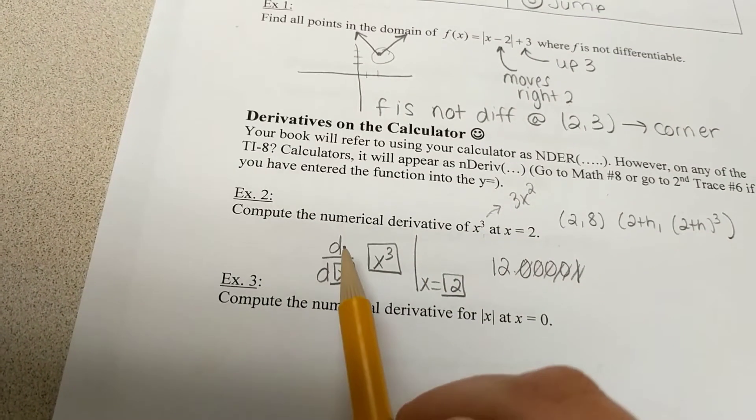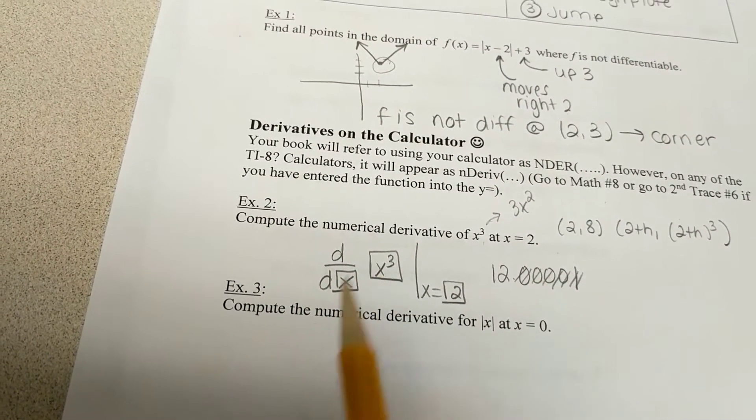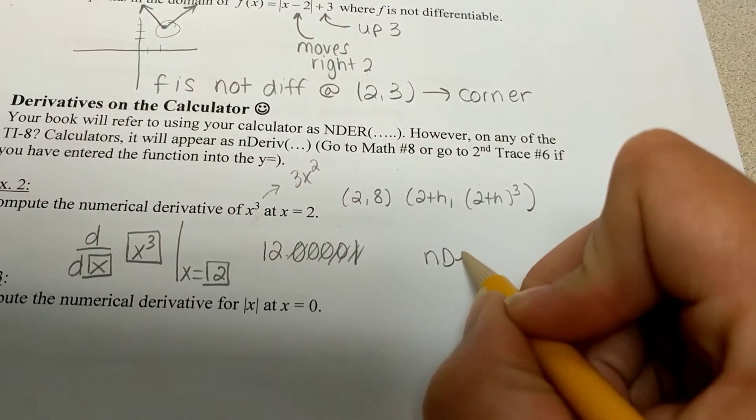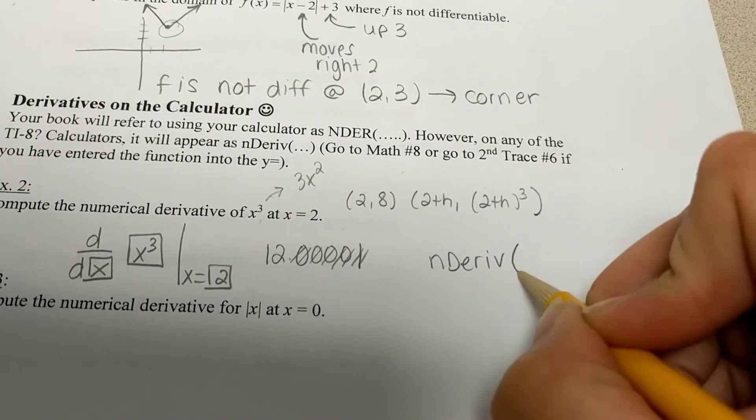You're saying at x equals 2, the slope with respect to x of x cubed. And on the TI-83s, I'll write that one out again, since I just did it.